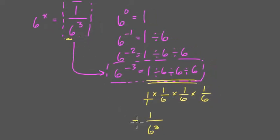And how does it help us? Well, in this case, 6 to the x would equal 1 over 6 to the 3rd. So what exponent gave us that? And that was right here, negative 3. So x would be negative 3.